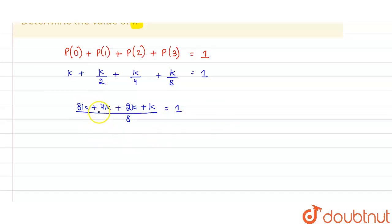four plus eight, twelve, thirteen, fourteen, fifteen. So this is fifteen k equal to eight. So that means my k value is eight by fifteen.